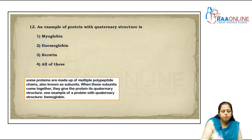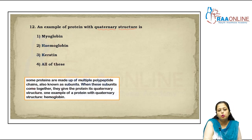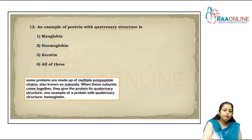Next question: an example of a protein with quaternary structure. The quaternary structure refers to proteins made up of multiple polypeptide chains called subunits; when these subunits come together they give the protein its quaternary structure. One classic example with quaternary structure is hemoglobin — so the answer is hemoglobin. There are four types of protein structure: primary, secondary, tertiary, and quaternary. The primary structure is the chain of amino acids; secondary structure includes the alpha-helix and beta-pleated sheet, linked by hydrogen bonds.